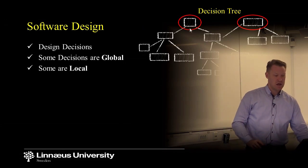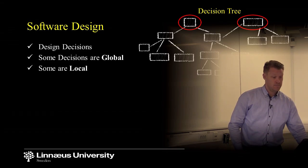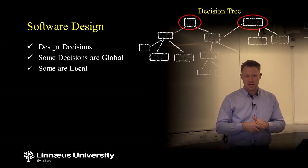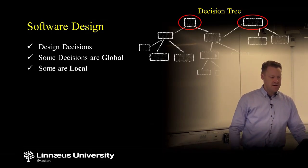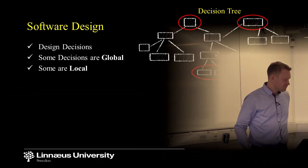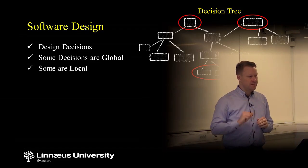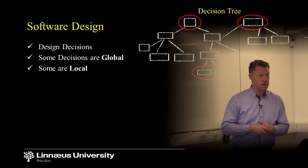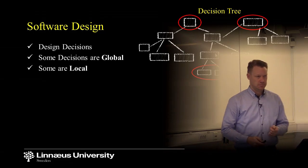Since global decisions impact many other decisions made during the course of the project, we have a lot of things that we need to redo, redesign, and reconsider. Local decisions are not that tough to change because there are not too many other design decisions depending on them. So local decisions are much easier to manage compared to global ones. Global decisions impact the local ones, and we must decide on the global ones first.